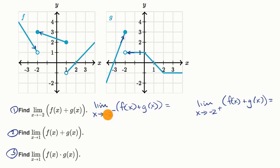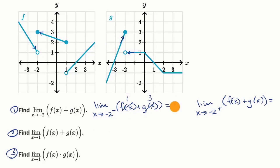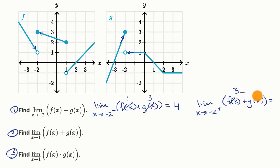So what are these things? As we approach negative two from the left, f of x is approaching one and g of x is approaching three, so the sum is approaching four. And coming from the right, f of x looks like it's approaching three and g of x is approaching one — so again the sum is four. Since the left and right-hand limits are approaching the same thing, this limit exists and is equal to four.